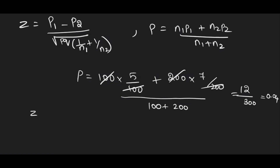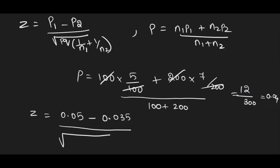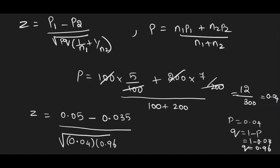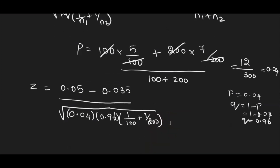Now substituting into Z: p1 = 0.05 minus p2 = 0.035, divided by the square root of p·q × (1/n1 + 1/n2). Since p = 0.04, q = 1 − p = 1 − 0.04 = 0.96. We write q as 0.96, with 1/n1 = 1/100 and 1/n2 = 1/200.